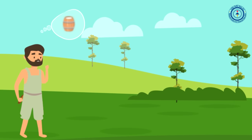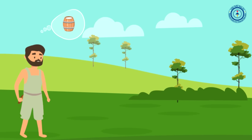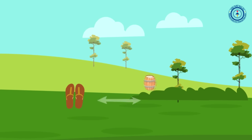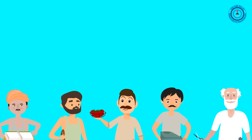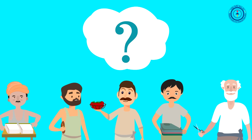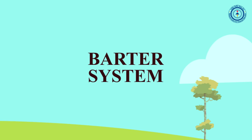Manoj needs milk, but the quantity of milk to be received in exchange for a pair of slippers is very high, and with milk being perishable, Manoj doesn't want to take too much of it. Hence, barter does not take place. Thus, the exchange of goods was not easy. Imagine the confusion. That's why the barter system gradually ended.